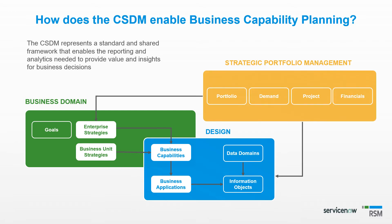The orange box represents investment innovation, strategic planning, ideation, projects, and demands. The relationships between all these elements are essential for business capability planning.